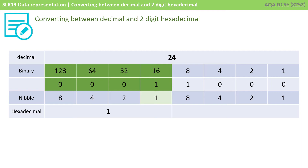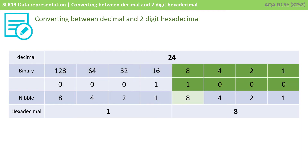I now group the left-hand four bits and apply a mini weighting line of one, two, four, eight. I've got nothing in the eight column, nothing in the four, nothing in the two, and a single digit in the one column — so this left-hand section represents one. The right-hand section has a one in the eight column and nothing in the four, two, and one columns — so this is an eight. So the decimal number 24 is 18 in hexadecimal. Be careful — that's one eight, not eighteen.